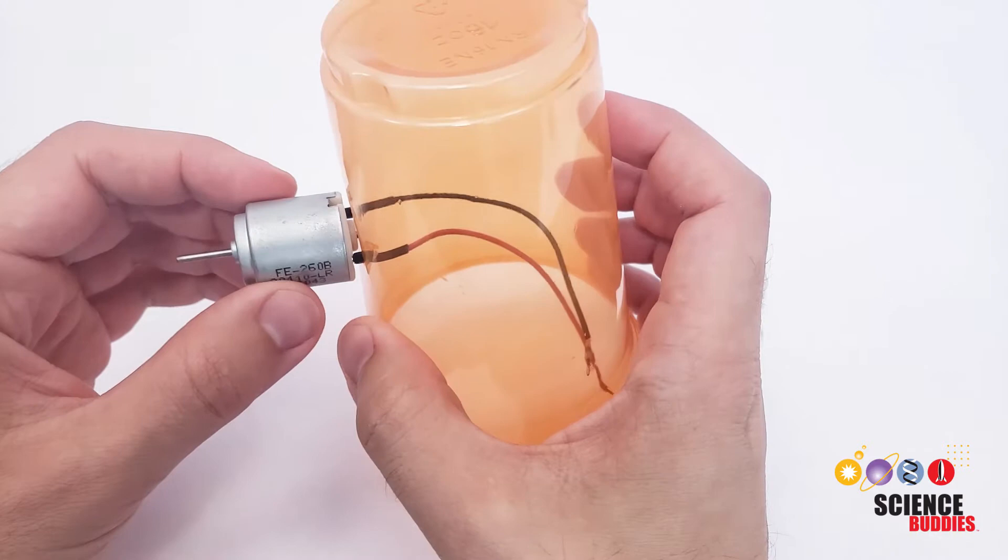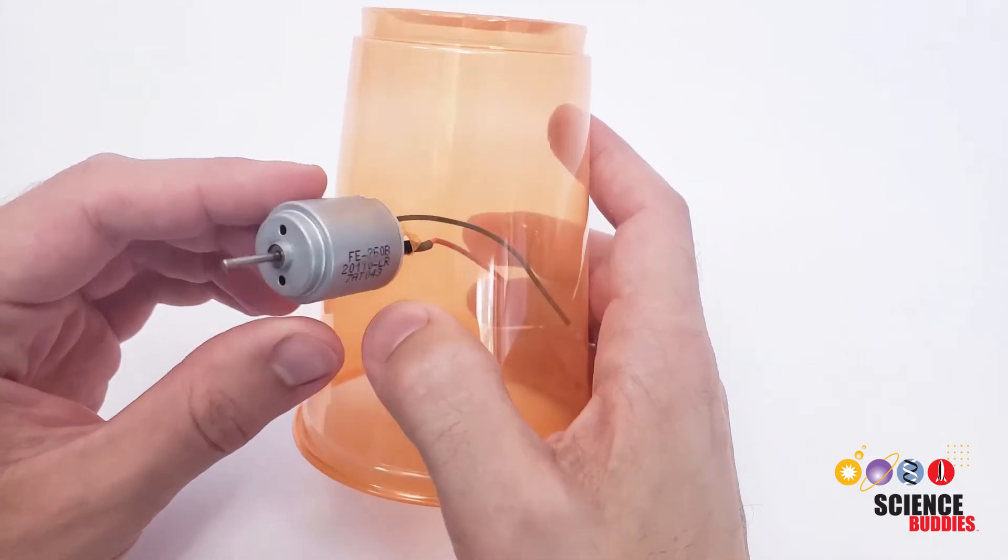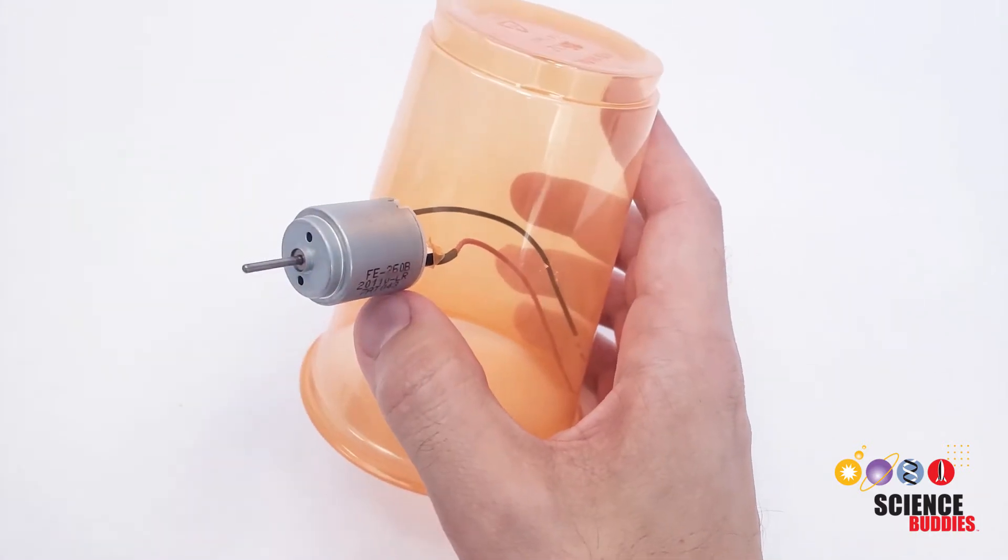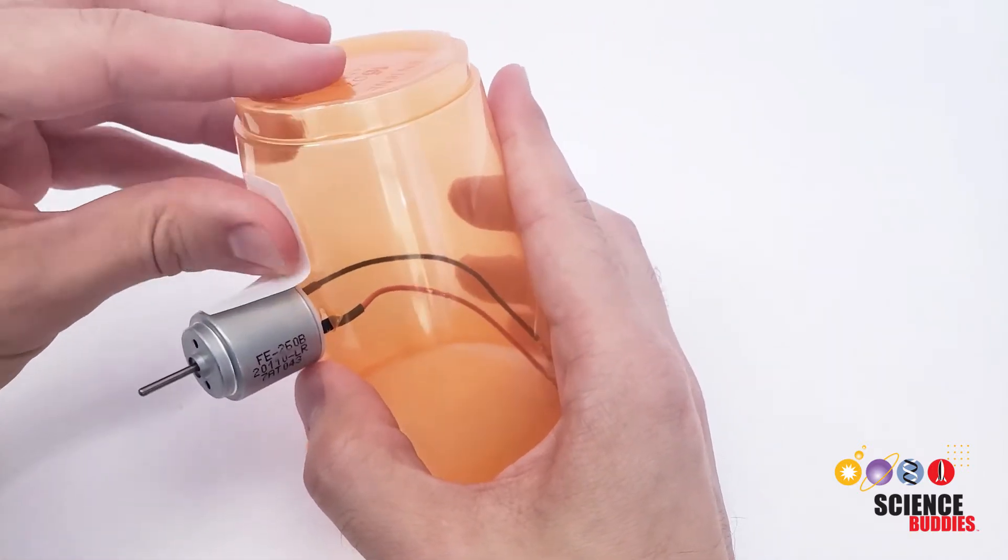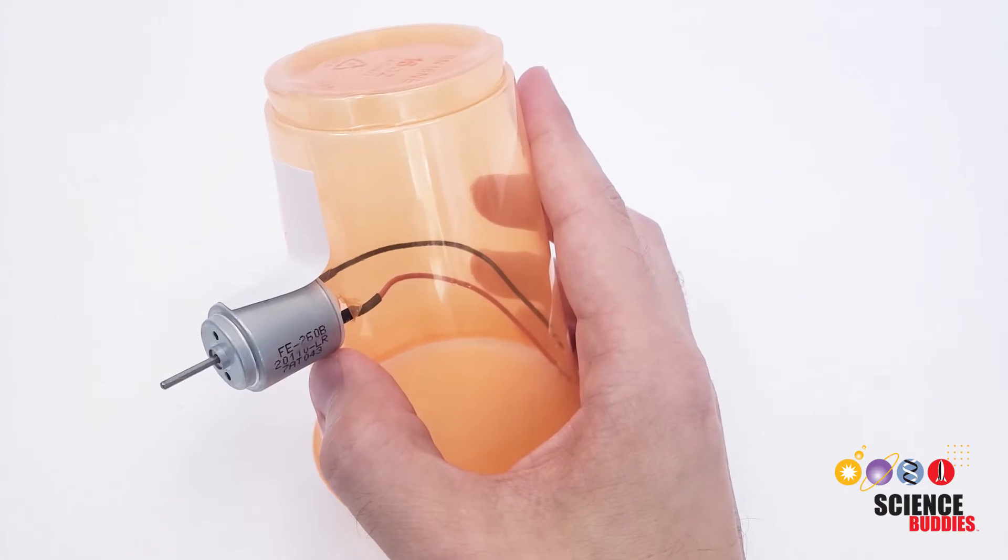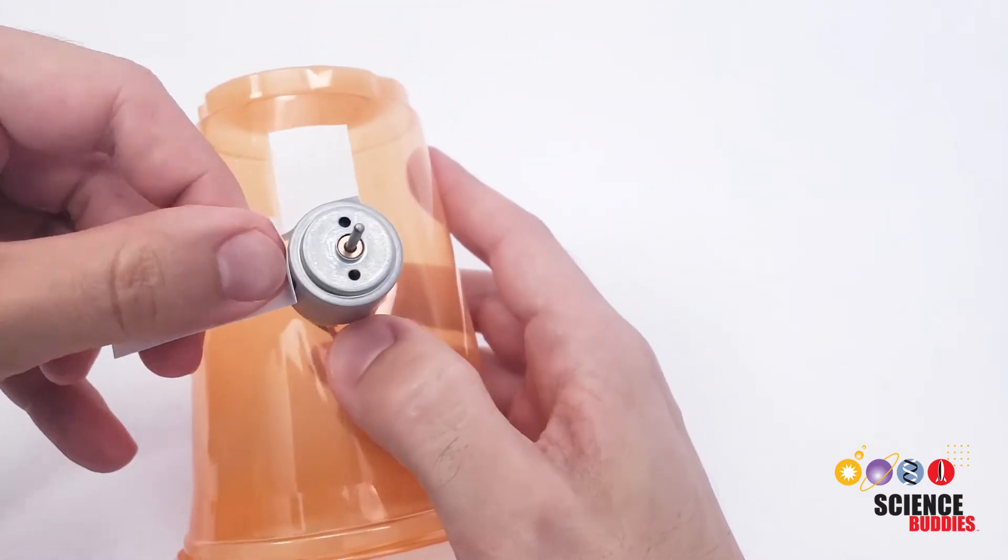Now, we don't just want to rely on the friction of those wires to hold the motor in place because your art bot is going to be wobbling around. So you can use a few pieces of tape to securely attach the motor to the cup so it does not fall out once your robot starts wobbling.